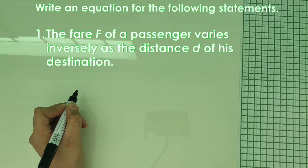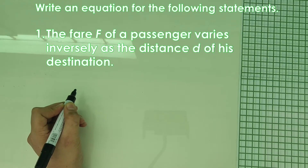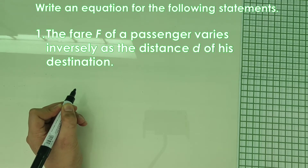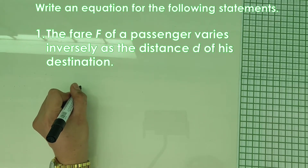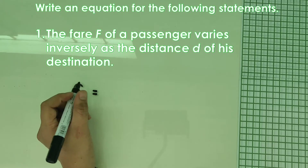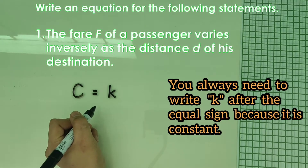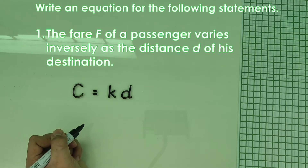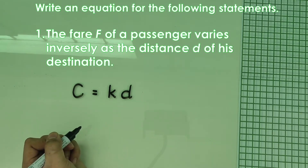Now we will learn how to transform a given statement into a direct variation equation. The technique is: whichever letter or variable is mentioned first, that's what we write first. Number one: 'The circumference C of a circle varies directly as the diameter D.' So the equation is C = kD. This is our direct variation equation for number one.